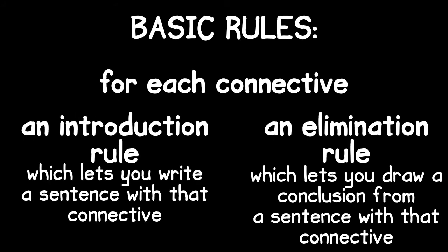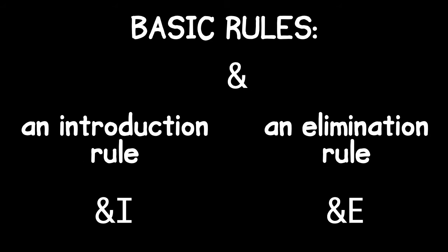In addition, we'll have two rules for each connective. For each connective we'll have an introduction rule which lets you write down a sentence with that connective, and we'll have an elimination rule which lets you draw out a conclusion from a sentence with that connective. We'll abbreviate introduction as capital I and elimination as capital E.